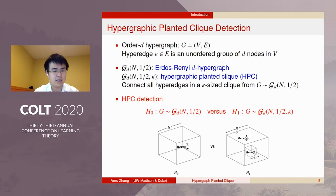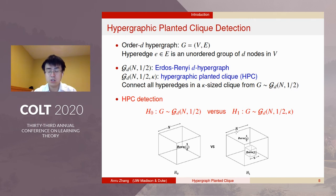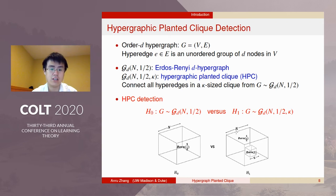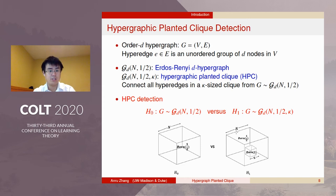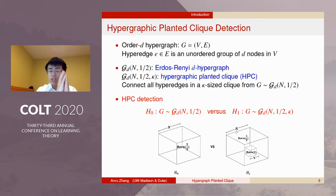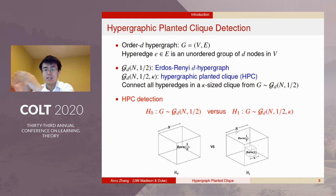Now let's formally introduce HPC. We consider the order-D hypergraph, where each hyperedge is an ordered group of D nodes. We consider the Erdős–Rényi hypergraph, where each hyperedge is connected or disconnected with equal probability. We also define a hypergraphic planted clique model: we first generate the Erdős–Rényi D-hypergraph, then randomly pick K nodes and connect all hyperedges among them. HPC detection is essentially a hypothesis test — given a hypergraph G, we want to know whether G comes from the vanilla Erdős–Rényi, or whether G contains a clique of size K.